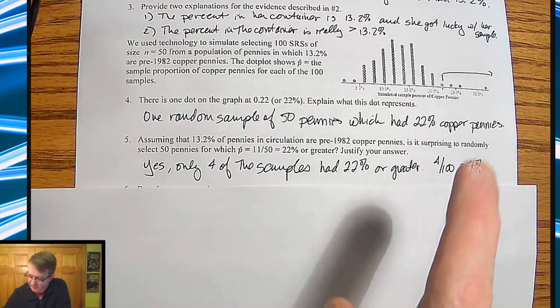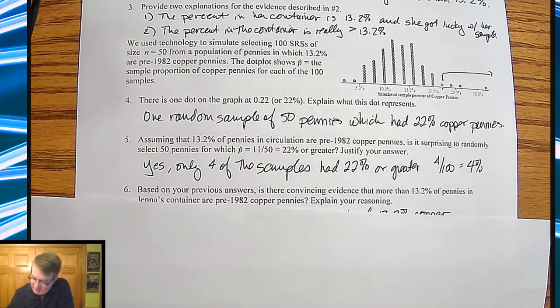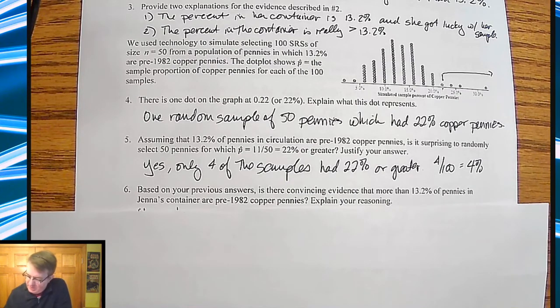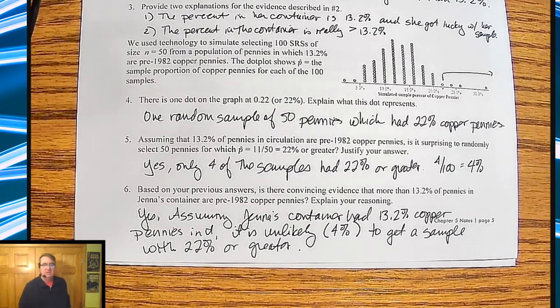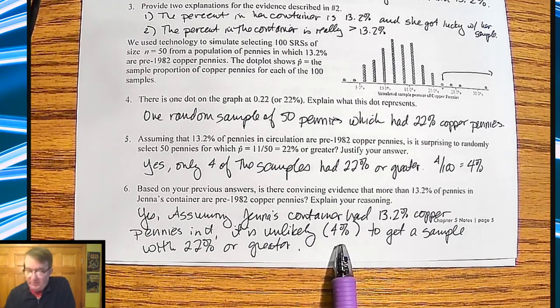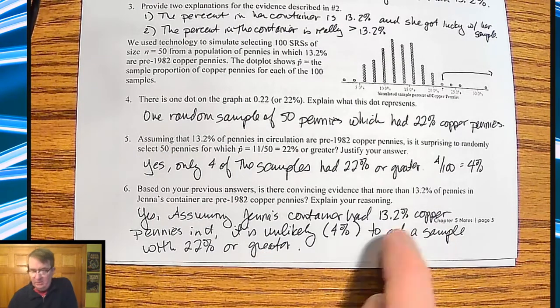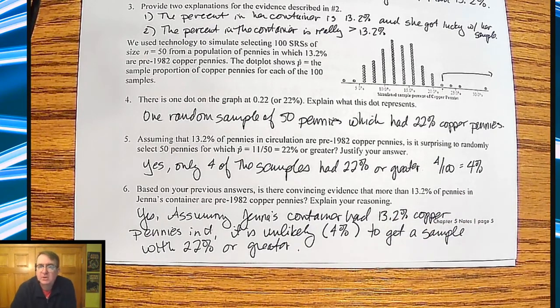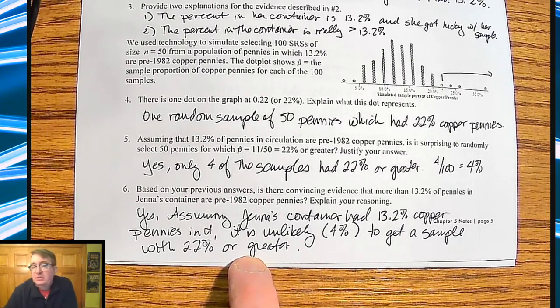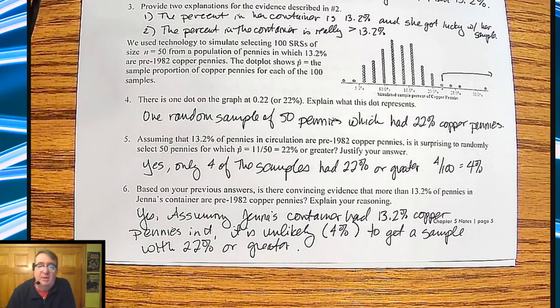Based on your previous answer, is there convincing evidence that more than 13.2% of the pennies in Jenna's container are pre-1982 copper pennies? Yes. Assuming that Jenna's container contained 13.2% copper pennies, it is unlikely at a 4% level to get a sample with 22% or greater. So we're saying that what we're seeing, if a container held true and matched what the population has, what we're seeing is unlikely. So it is surprising. And we would say there's evidence there saying that she probably has more than that 13.2% of copper pennies in that container.